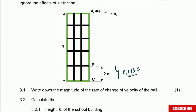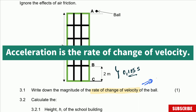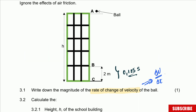Write down the magnitude of the rate of change of velocity of the ball. Rate of change of velocity — remember, every time we speak about rate, it means change divided by time, so it's change in velocity divided by time. What physical quantity is this? Going back to basics, this is acceleration. Acceleration is the rate of change of velocity, and since this is a projectile, the magnitude of the acceleration is g, equal to 9.8 meters per second squared.